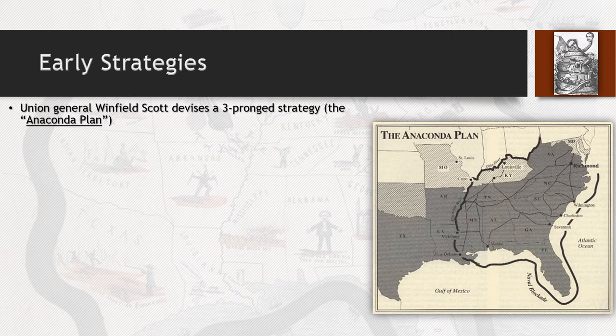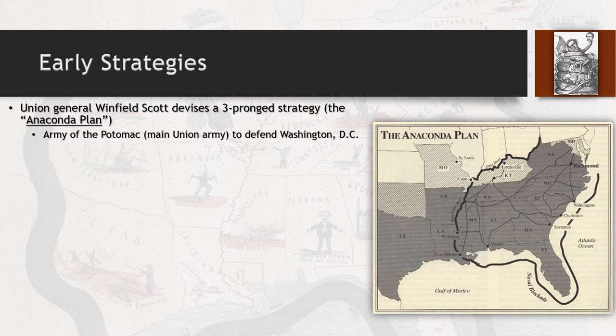One of the first strategies presented involves Union General Winfield Scott, who devises what he calls a three-pronged Anaconda Plan. The whole idea is to perform the exact action that an anaconda does with its prey — to strangle and basically surround the Confederacy as much as possible, separate it into two distinct sections, and starve it to death.